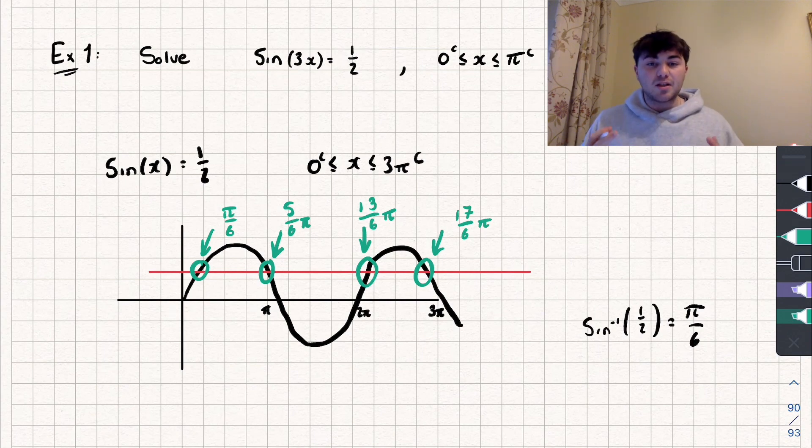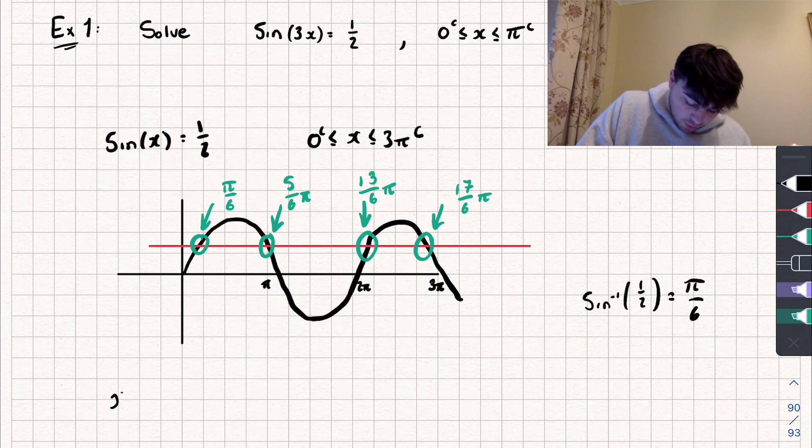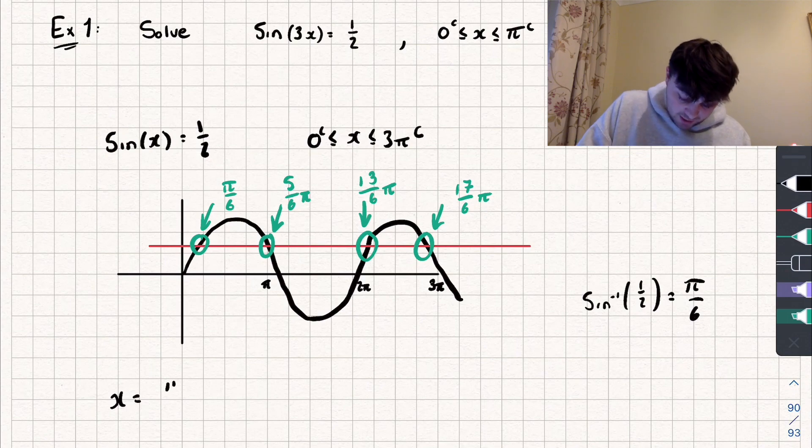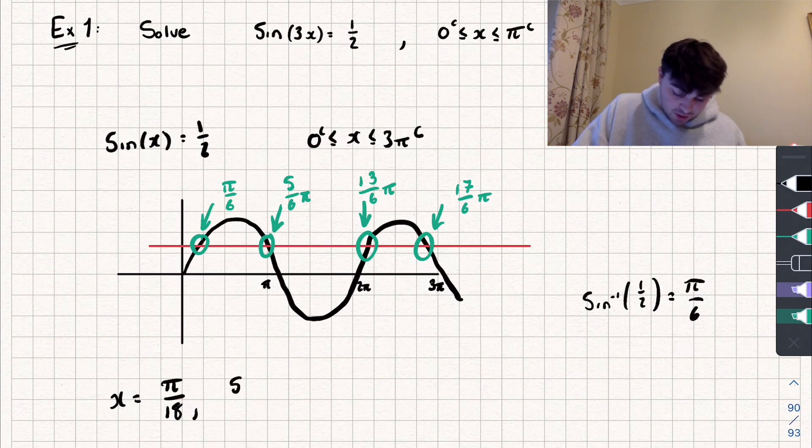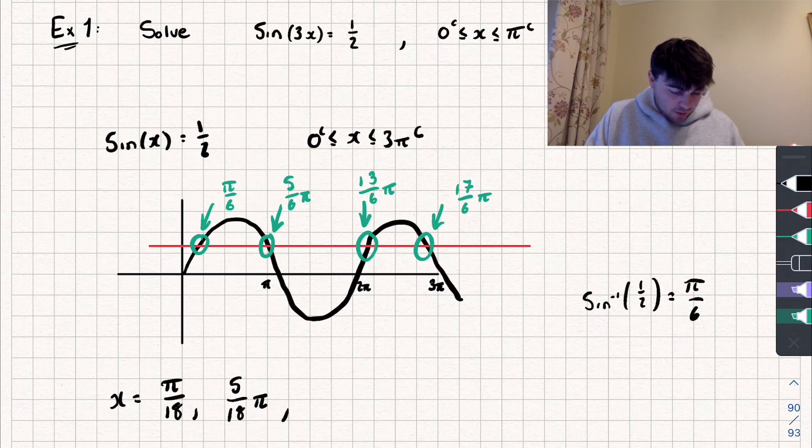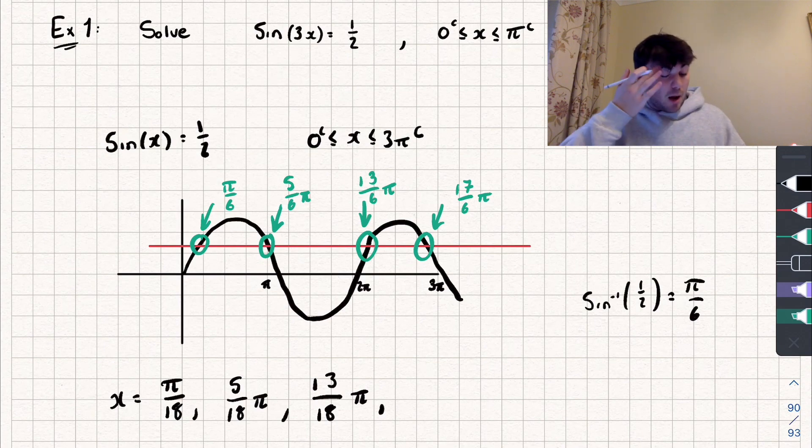But remember, we're not solving sine of x equals 1 half, we're solving sine of 3x equals 1 half, which means I'm going to have to take these solutions and divide them all by 3. So we're going to get x is equal to, well, let's work it out, we've got pi over 6 divided by 3, which is going to be pi over 18 as our first solution. For our second one, we've got 5 over 6 pi divided by 3, which is 5 over 18 pi radians. For our fourth, we've got 13 pi over 6 divided by 3, and we get 13 over 18 pi. 17 pi over 6 divided by 3, and we get 17 over 18 pi.